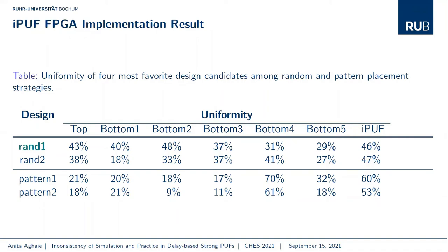To select the best design, we considered uniformity since reliability and uniqueness metrics were mostly the same. This table lists the uniformity of four finalists. For each placement strategy — random or fixed pattern — we selected two finalists: RAND 1 and Pattern 1 as the ones with best average uniformity across all ARPUF instances while keeping final response uniformity in the range of 40%–60%, and RAND 2 and Pattern 2 as those with the best uniformity for final responses. We ultimately chose the design identified as RAND 1.